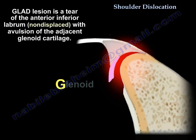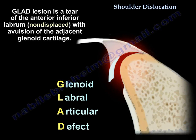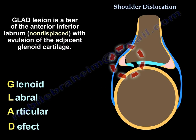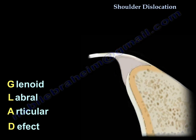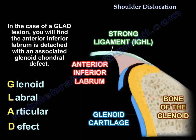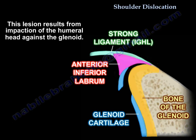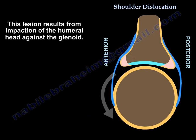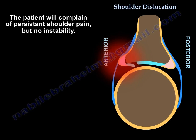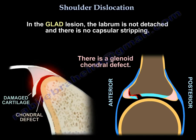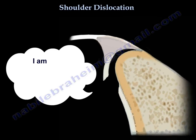The GLAD lesion is a tear of the anterior inferior labrum. It is non-displaced, but it has an avulsion of the adjacent glenoid cartilage, so there is an associated glenoid chondral defect. This lesion results from impaction of the humeral head against the glenoid. The patient will have shoulder pain but no instability, and the labrum is not detached.